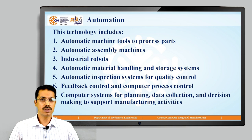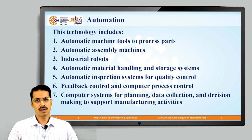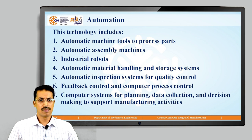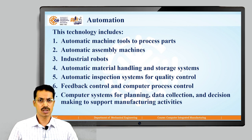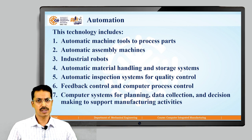Next is industrial robots. Robots play a crucial role in the manufacturing of any product. Robots can be used for pick-and-place operations as well as for final product assembly — there are various applications. Next is automatic material handling and storage systems, also known as ASRS.